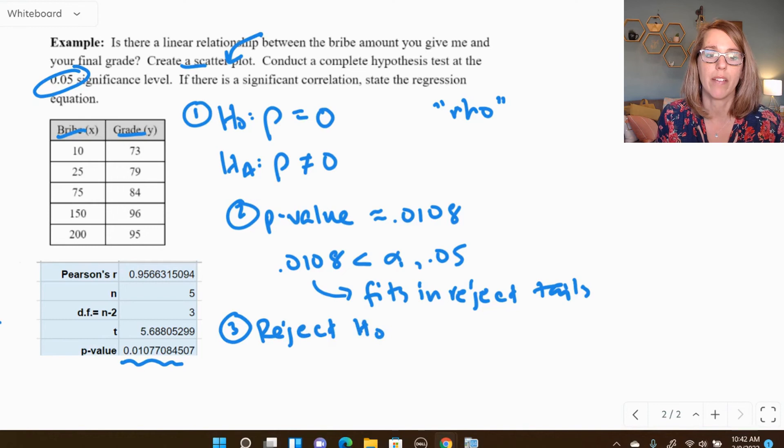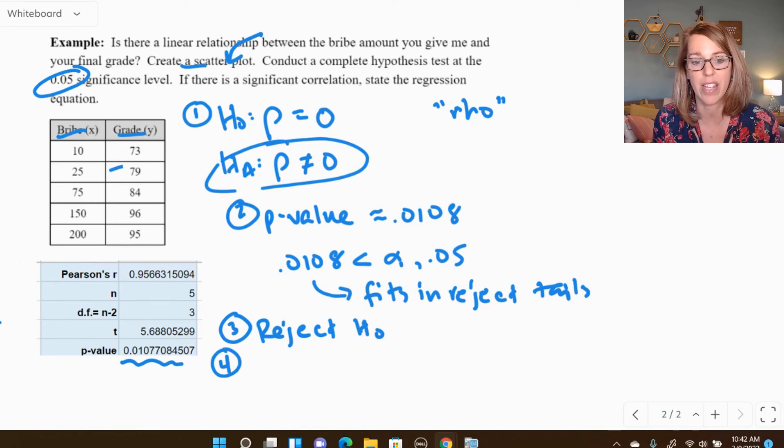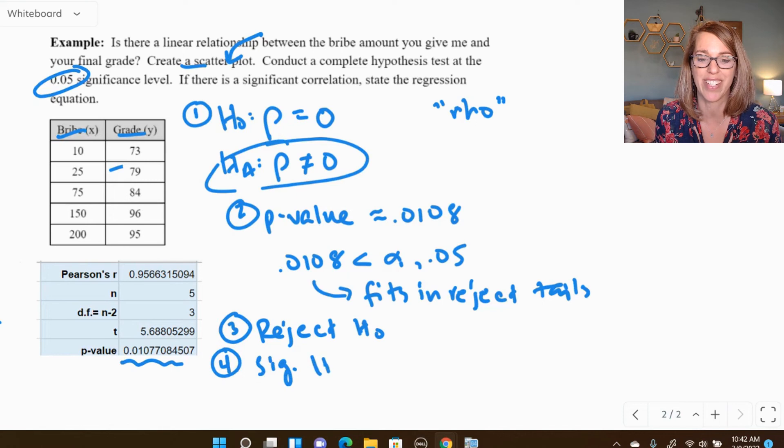That means that we are in favor of the alternative hypothesis. So step number four, we have found a significant linear correlation.